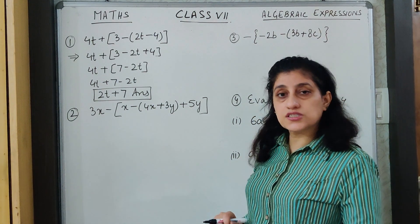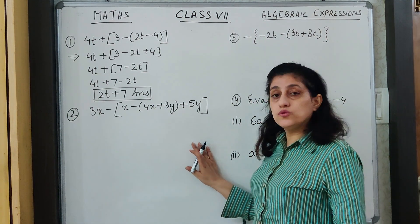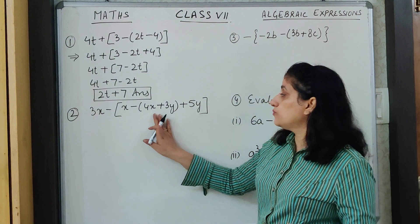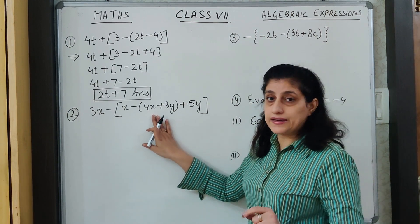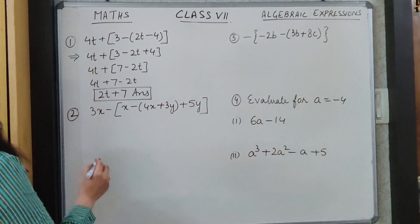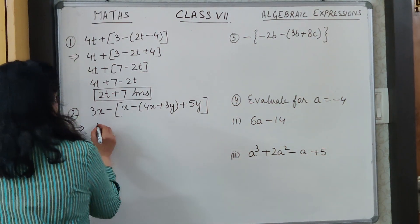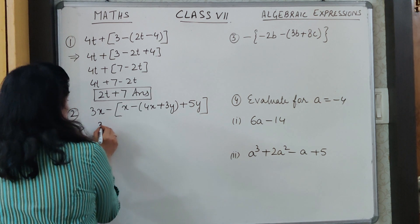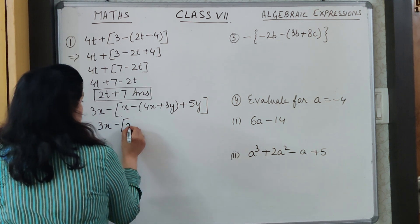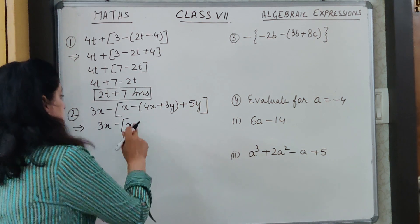The next question is already noted for you. The same rule applies — begin with the innermost bracket. Let's see how to go about it. The first step: keep 3x and solve the innermost bracket.